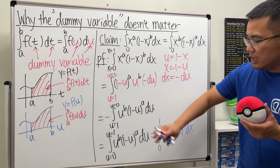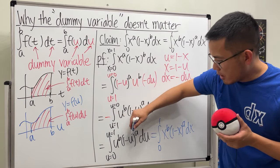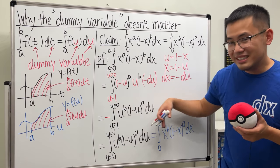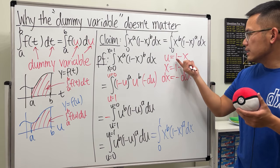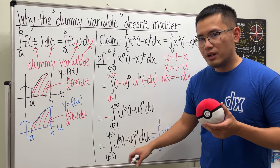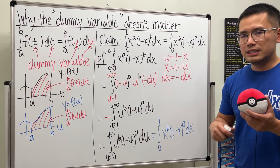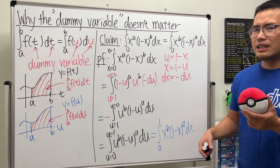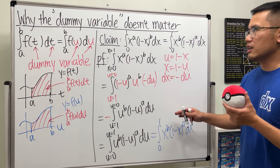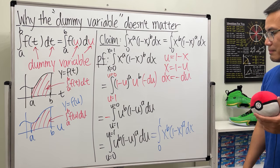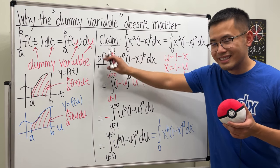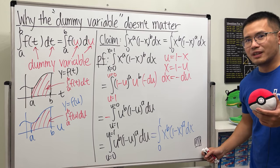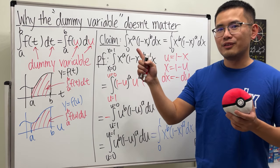This is valid because, as we discussed, changing the dummy variable doesn't change the value of a definite integral. So this equals the right-hand side — not because we substituted back, but because the dummy variable argument applies. This can be confusing the first time you see integral proofs, but it's something you'll get used to. The proof is complete — it deserves a box! For more integral questions, check out my playlist.